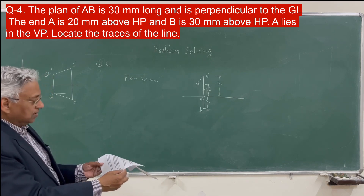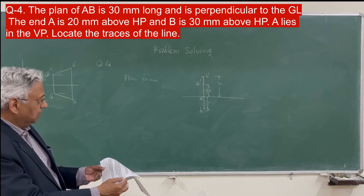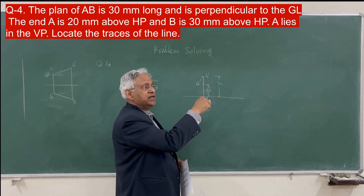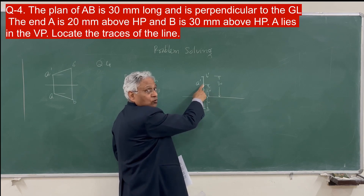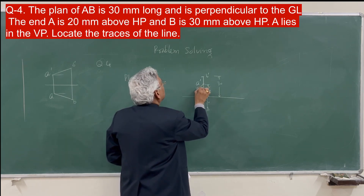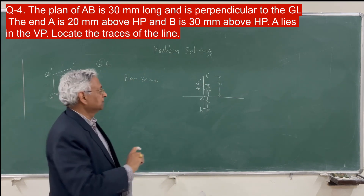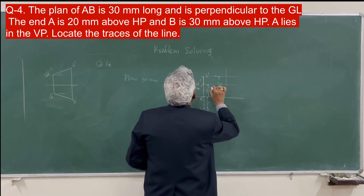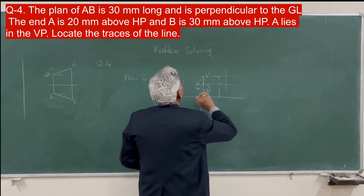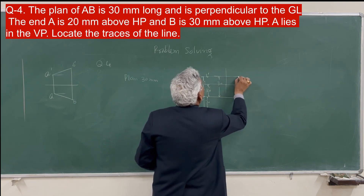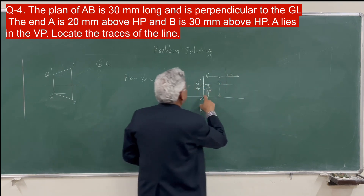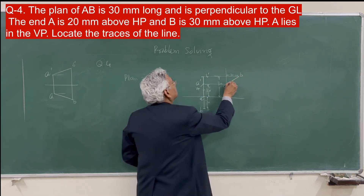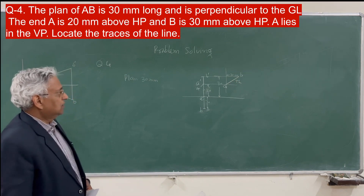Now the question also asks to locate the traces of line AB and find the distance between them. Because the line is in the vertical plane, this point becomes the vertical trace. The vertical trace — to find the vertical trace — you project the plan here onto the profile plane. A will be here. And B will be at 30 millimeters. This is 30 mm and this is the line.